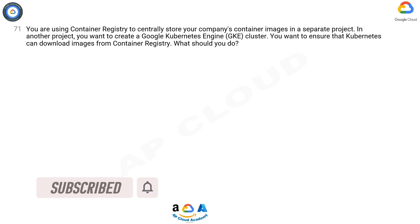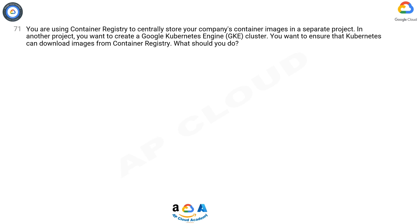Question. You are using Container Registry to centrally store your company's container images in a separate project. In another project, you want to create a Google Kubernetes Engine cluster. You want to ensure that Kubernetes can download images from Container Registry. What should you do?